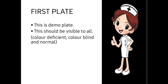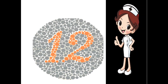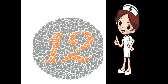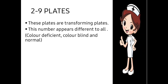Now let's move to the first plate. It is a book and we have to open the book and ask the patient different questions. The first plate is a demo plate — this should be visible to all patients, whether color deficient, color blind, or normal, because it is a demo plate. We ask the patient what number is written on this plate, and the answer will be 12.